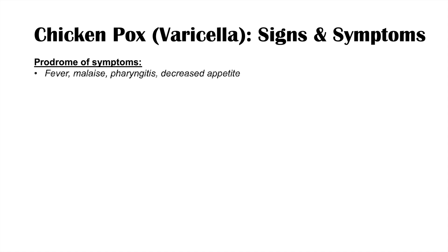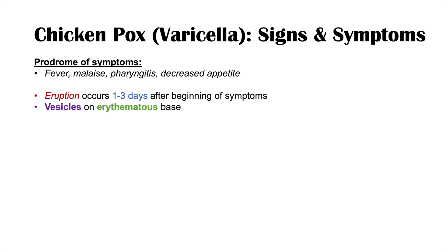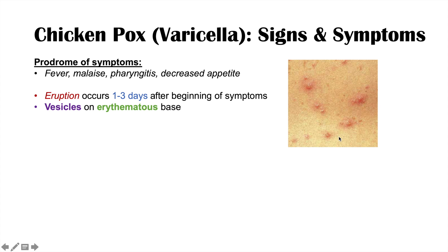What are the signs and symptoms of chickenpox? There is a prodrome of symptoms — symptoms prior to the eruption of the chickenpox vesicles. These generally involve fever, malaise, pharyngitis (sore throat), and decreased appetite, very similar to any other viral infection. The eruption of vesicles occurs one to three days after the beginning of these prodromal symptoms. The vesicles are described as being on an erythematous base, meaning there is redness on the skin with a vesicle on top.